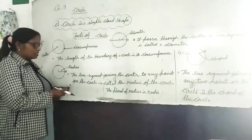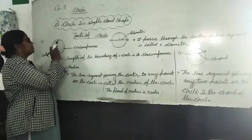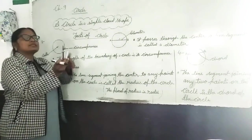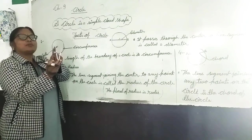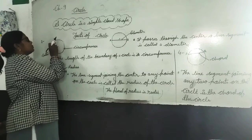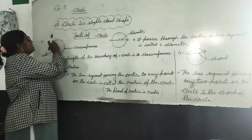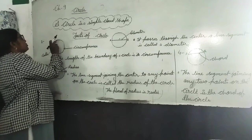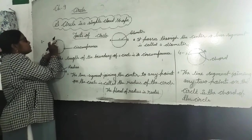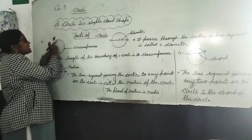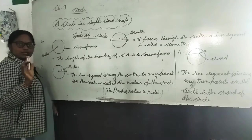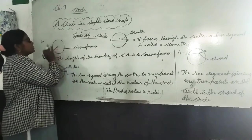First, what is the center? So when we draw a circle using a compass — with a nail point and pencil point — we put it on the paper and move the compass to draw a curve. The fixed nail point is what we call the center.